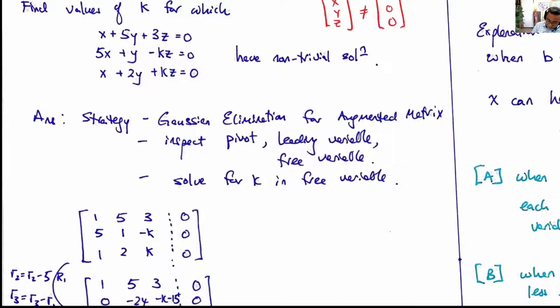As mentioned, the strategy is first perform Gaussian elimination. Next, when finishing the Gaussian elimination, we will inspect the number of pivots and then we want to see the leading variables and the free variables.